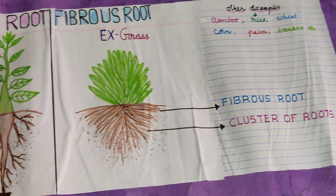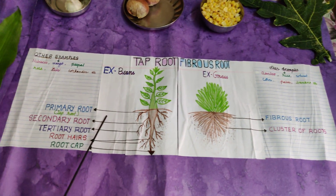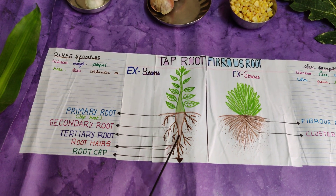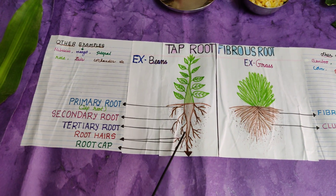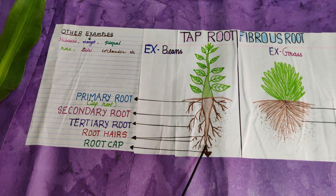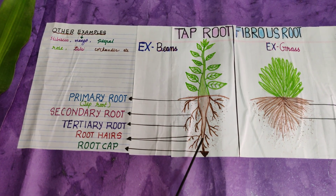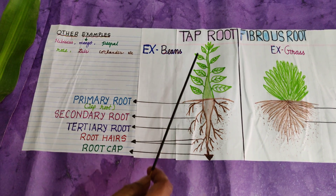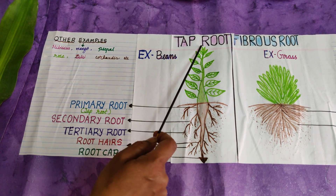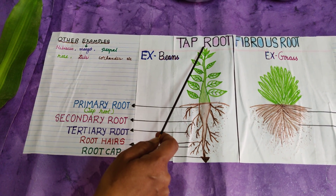Whereas in the tap root, you can see the tapering mother root, which is very strong. That is why, as it is tapering, it is called the tap root.